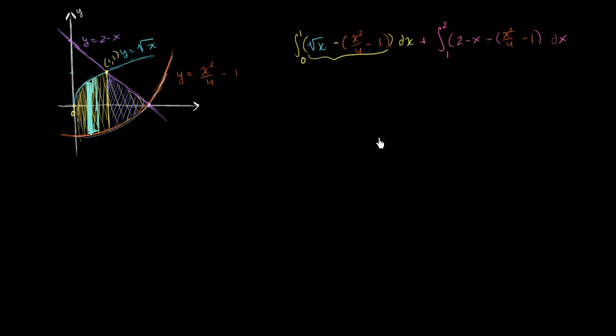And now we just have to evaluate. So let's first simplify this. This is equal to the definite integral from 0 to 1 of square root of x minus x squared over 4 plus 1 dx. Plus the definite integral from 1 to 2 of 2 minus x minus x squared over 4. Then subtracting a negative 1 is a positive 1. We could just add it to this 2. And so this 2 just becomes a 3. dx.